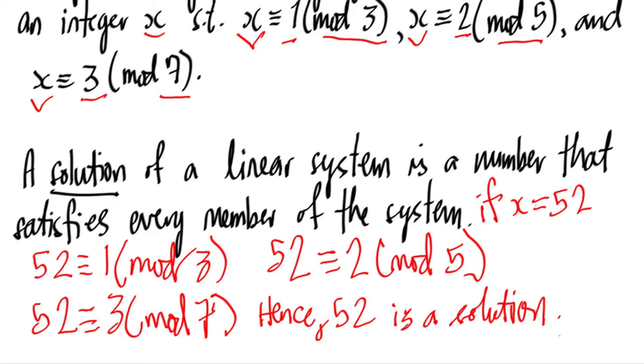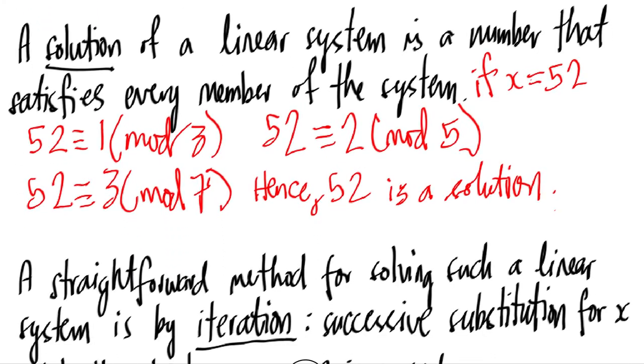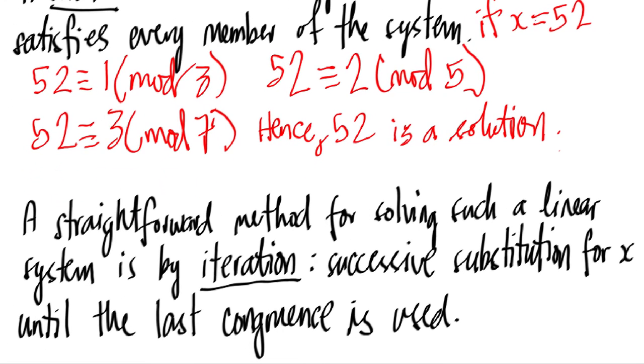A straightforward method for solving such a linear system is what we call by iteration. This is the successive substitution for x until the last congruence is used, as the following example.